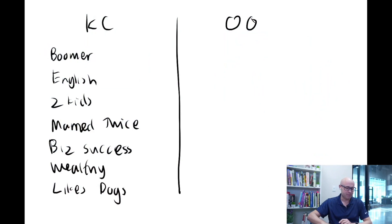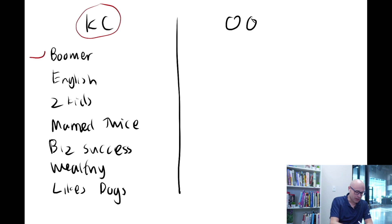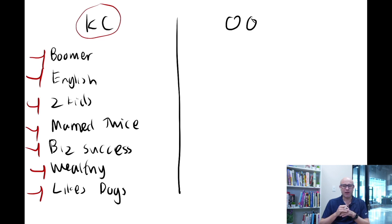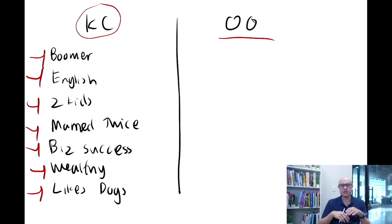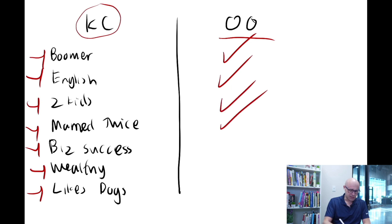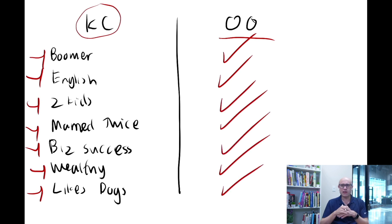If you look at King Charles: he's a boomer, he's English, he's got two kids, he's been married twice, he's had business success, he's wealthy, and he likes dogs. But then if you look at Ozzy Osbourne — who we can all agree is a totally different individual with different preferences and tastes — he's also a boomer, English, got two kids, married twice, had business success, wealthy, and likes dogs. So if you're using the old way, it's going to be really, really difficult.